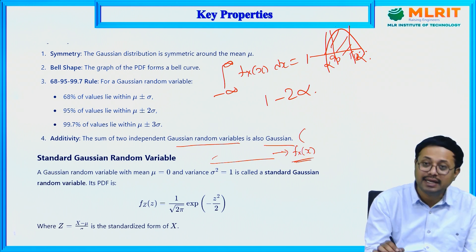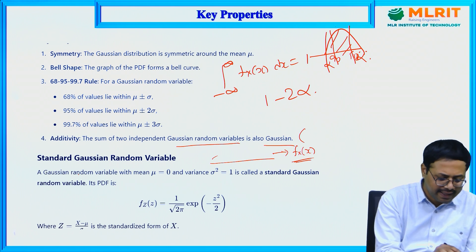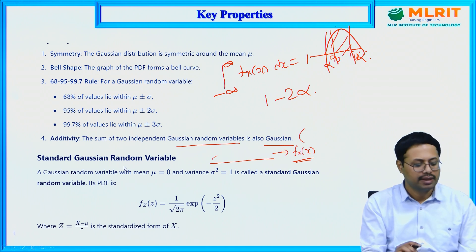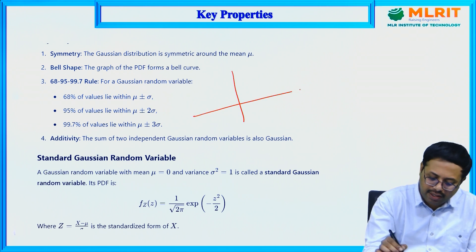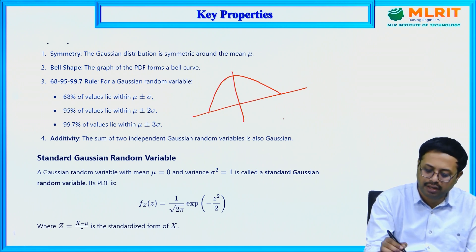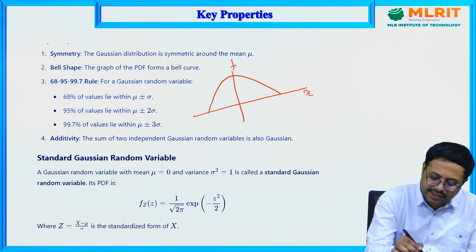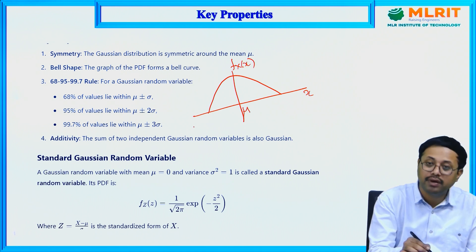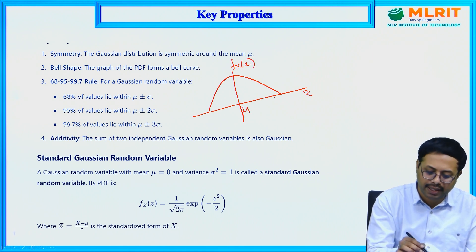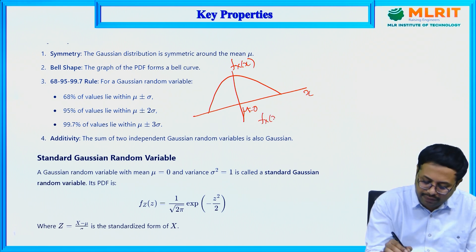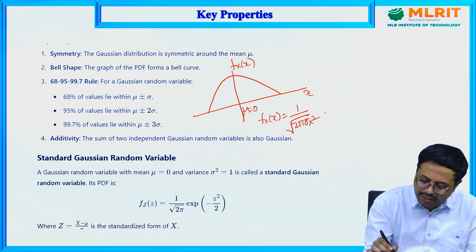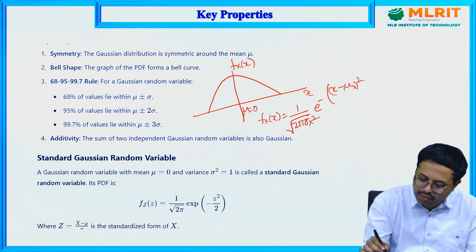The standard Gaussian random variable applies when the mean μ = 0 and σ = 1. The general formula is 1 over √(2π σ²) times e to the power of −(x − μ)² / (2σ²). This special case is denoted as N(0, 1), representing a normal distribution with mean 0 and variance 1.